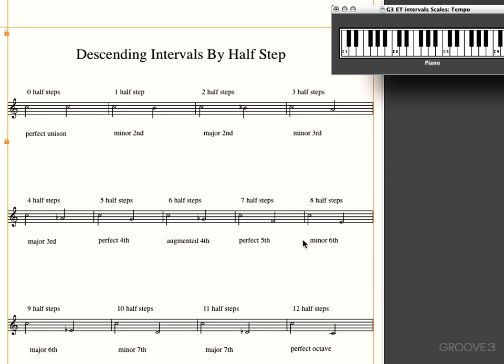We'll go to eight half-steps. C to E is a minor sixth. Nine half-steps. C to E-flat. Major sixth. Ten half-steps. C to D. Minor seventh. Eleven half-steps. Major seventh. C to D-flat. And then we have our perfect octave again. Twelve half-steps.